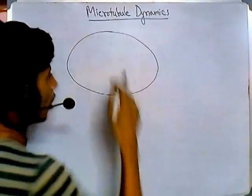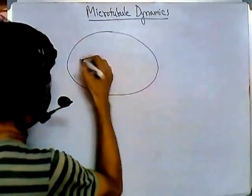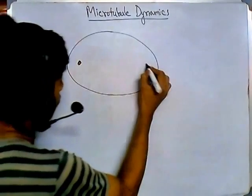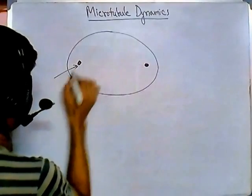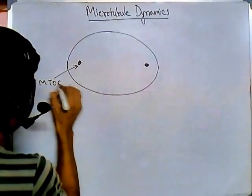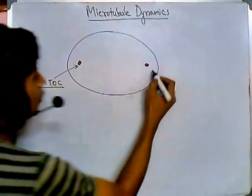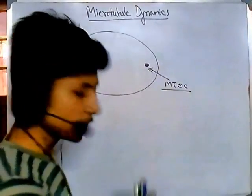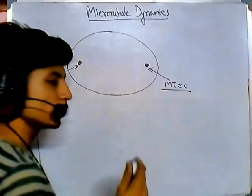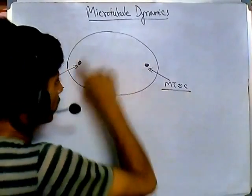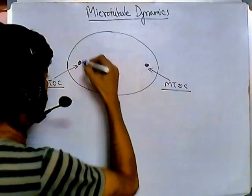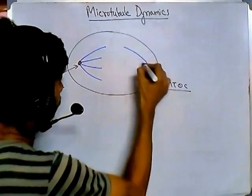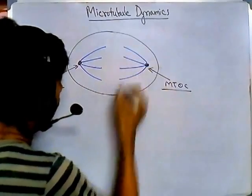During cell division, the separation of chromosomes — specifically the separation of sister chromatids — is the most vital part. For that we have a microtubule organizing center, called MTOC. Two microtubule organizing centers will be present at the two terminal parts of the cell, and from these organizing centers the microtubules start to arrange, producing filaments that hold all the chromosome structures.